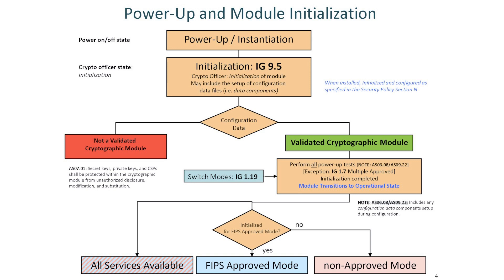The diagram points out the only exception: where the module was already in an approved mode of operation and is being switched to another approved mode of operation. In this instance, the power-up self-tests were executed previously and passed, so there's no reason to execute them again. This would not be the case, however, if the module were being powered up from scratch or if it was previously in a non-approved mode of operation.